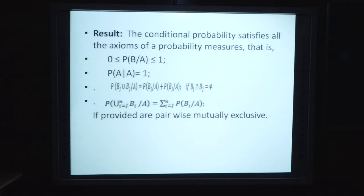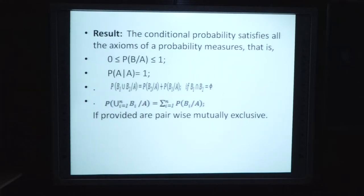Kuch results hain iske - the conditional probability satisfies all the axioms of the probability measures. That is P(B|A) lies between 0 to 1. Jis tarike se sabhi probability pehle ki unit mein bhi dekha tha ki probability 0 se 1 ke beech mein lay karti hai, negative nahi ho sakti - thik usi tarike se conditional probability bhi negative nahi ho sakti aur 1 se zyada nahi ho sakti. P(A|A) = 1. P(B1 ∪ B2 | A) = P(B2|A) + P(B1|A), if B1 ∩ B2 = φ. And P(∪ Bi | A) = Σ P(Bi|A), provided pairwise mutually exclusive events.